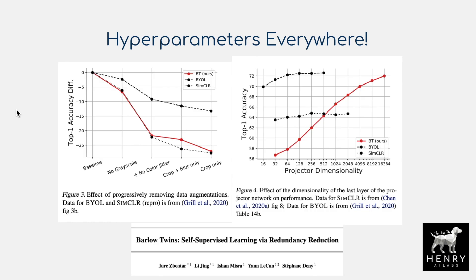To give a couple more examples before getting into the technical details: in the Barlow Twins paper, you can see the effect of different data augmentations — not using grayscale augmentation, not using color jittering, not using cropping — and the resulting performance, as well as looking at the final output projections, going from 32 up to 16,384, and all these fine-grained hyperparameter searches at the end of the representation in these contrastive learning algorithms.